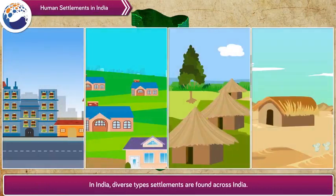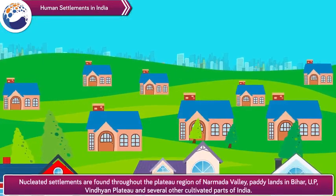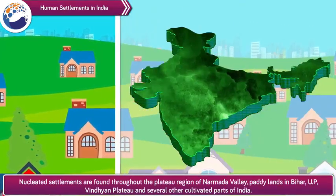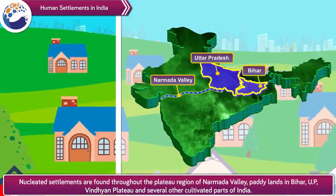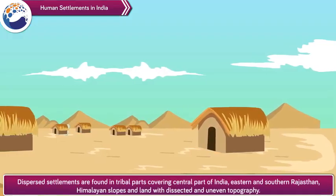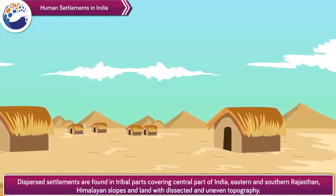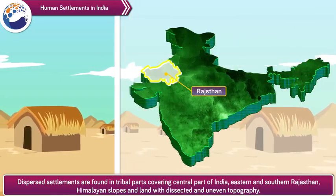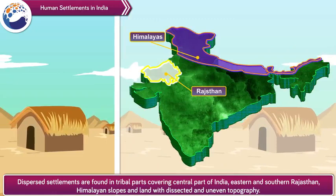Human settlements in India. In India, diverse types of settlements are found across the country. Nucleated settlements are found throughout the plateau region of Narmada Valley, paddy lands in Bihar, UP, Vindhyan Plateau, and several other cultivated parts of India. Dispersed settlements are found in tribal parts covering the central part of India, eastern and southern Rajasthan, Himalayan slopes, and land with dissected and uneven topography.